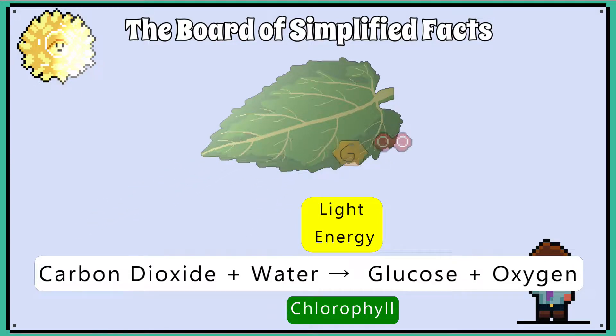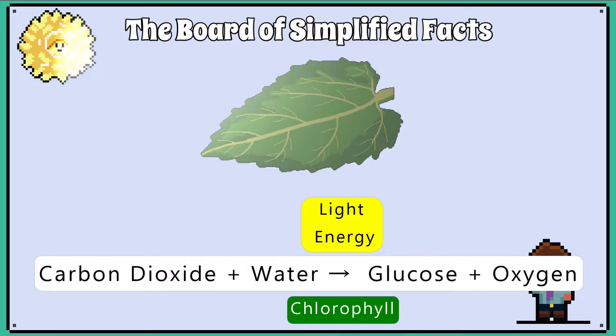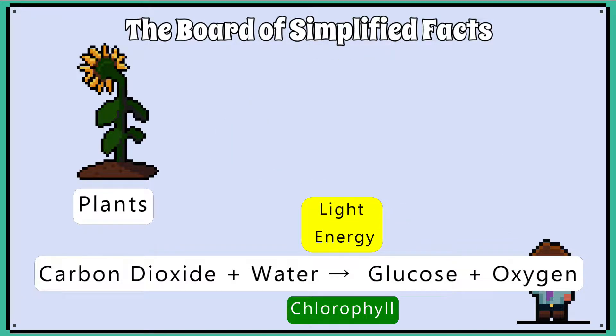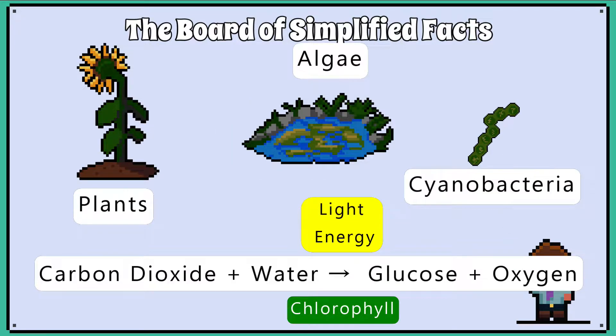Some organisms can produce food by using the energy in sunlight in a process called photosynthesis. Plants, algae and cyanobacteria are examples of organisms that can photosynthesize.